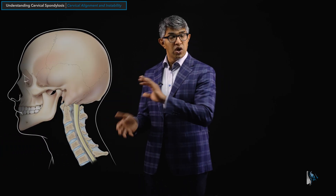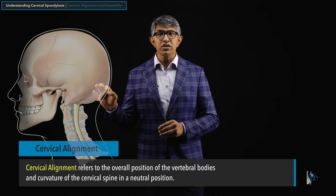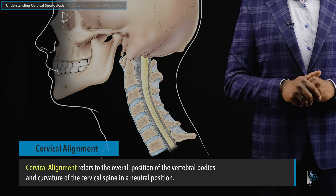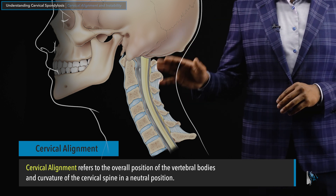When we think about cervical alignment, what we are talking about is the overall shape of the cervical spine when we look at it on the whole. We're not looking necessarily at just C4-5 or just C5-6. We're saying, what is the cervical spine's shape or overall architecture when people are standing up, looking forward in a neutral position? Cervical alignment refers to the overall position or shape of the vertebral bodies and the curvature of the cervical spine in a neutral position.